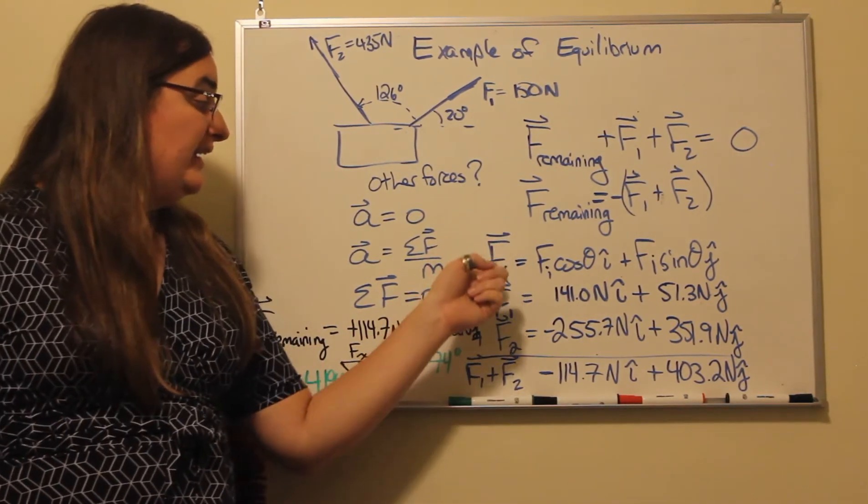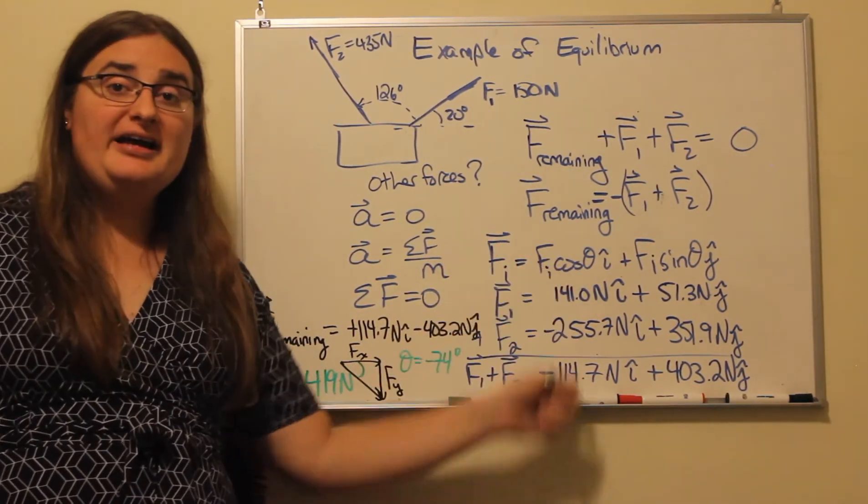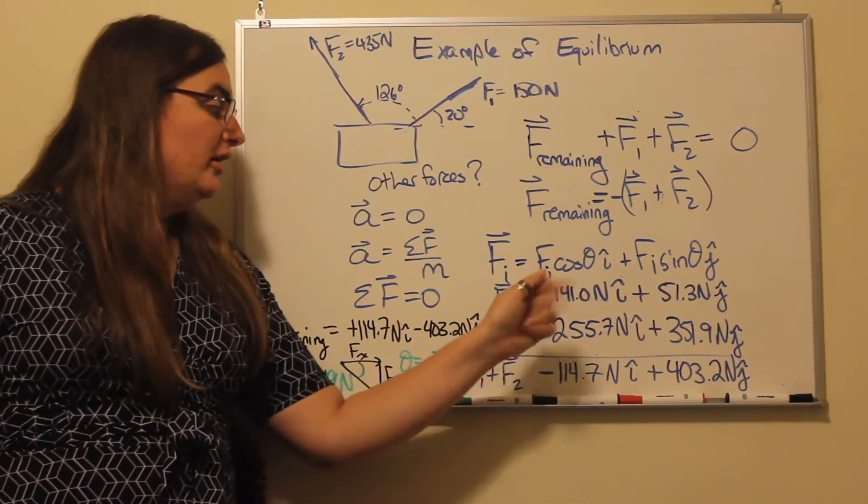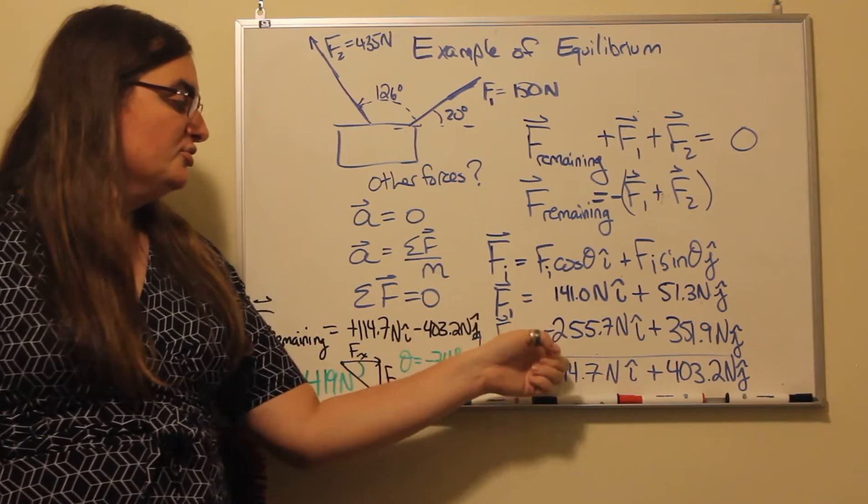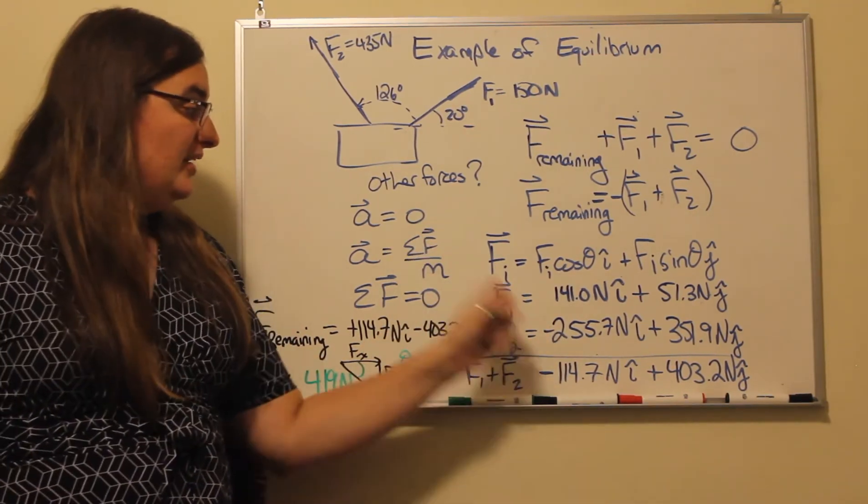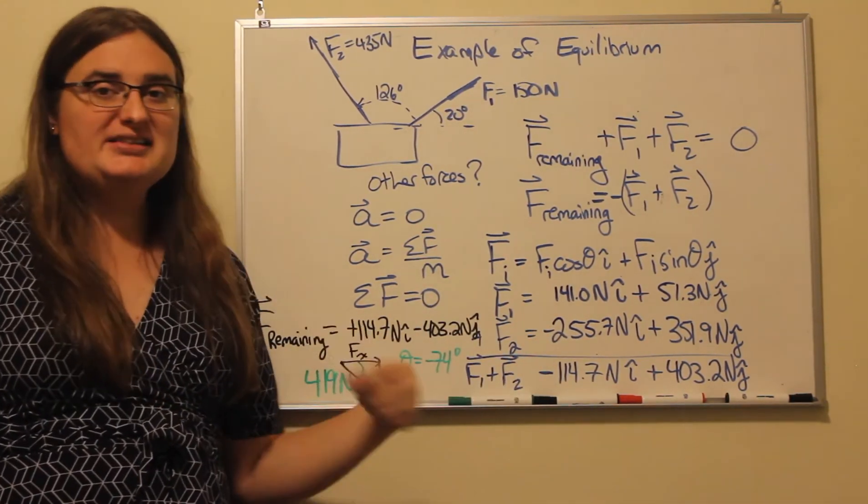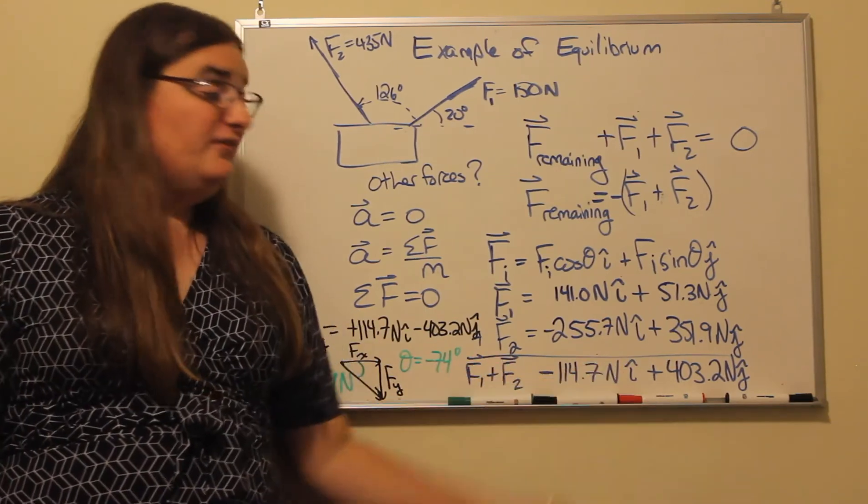So I take F1 plus F2, and I add direction by direction. 141.0 newtons plus negative 255.7 newtons gives me 114.7 newtons in the negative x direction.